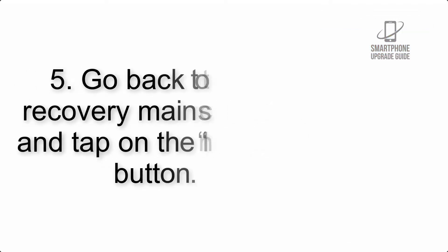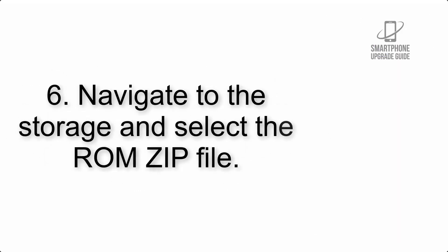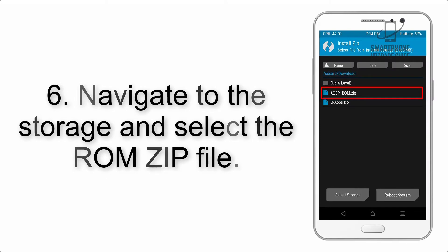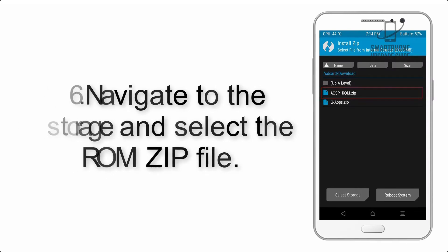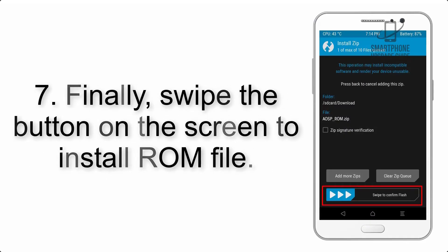Step 4: Swipe the button to wipe the device. Step 5: Go back to the recovery main screen and tap on the Install button. Step 6: Navigate to the storage and select the ROM zip file. Step 7: Finally, swipe the button on the screen to install the ROM file.